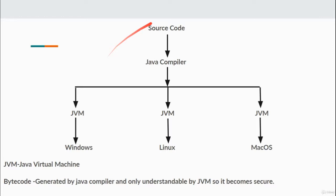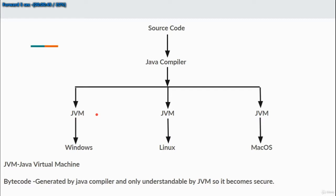For Linux the JVM is different, and for macOS the JVM is different. But the JVM makes the Java source code platform independent, meaning the source code can run on any operating system through the support of the JVM. That is why Java is known as a platform independent language.